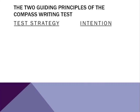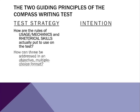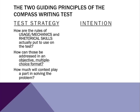We also discussed at length the two guiding principles of the Compass writing test, so we'll briefly review them here. In typical test strategy, we've thought about how the rules of usage and mechanics, and of course rhetorical skills, are actually put to use on the test — how can we address those in an objective multiple choice format? And then the overriding question about context: how much will context play a part in solving the problem on the writing section?